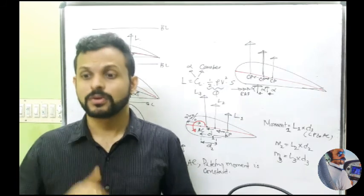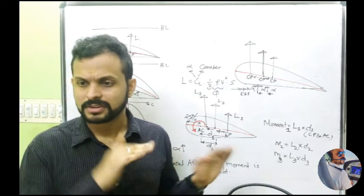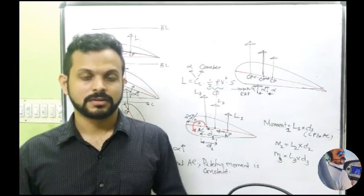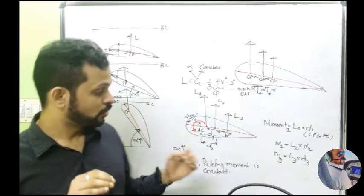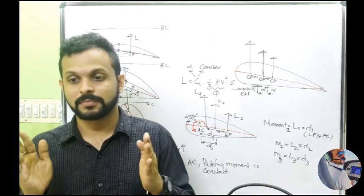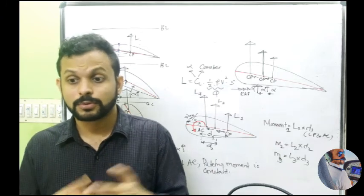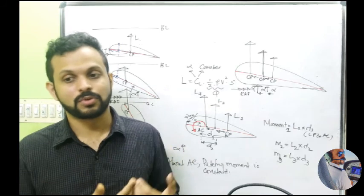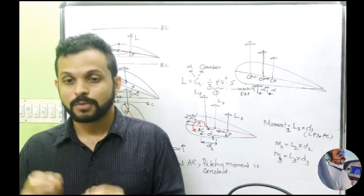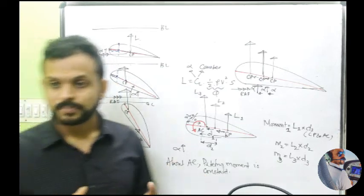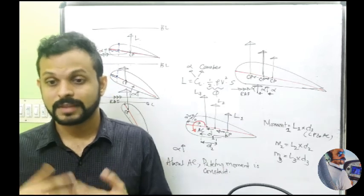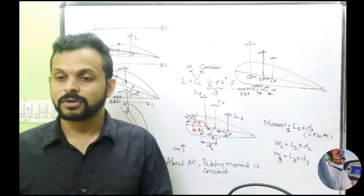Which of the following statements is correct? At normal angles of attack, the pitching moment is nose-up — the normal tendency of an aircraft is nose-down, so that statement is definitely wrong. Second: the pitching moment about the aerodynamic center is constant at normal angles of attack — think about it. All these explanations are within the limits of normal angle of attack up to stalling angle of attack. Beyond stalling, the entire aerodynamics of the wing is changing. So at normal ranges of angles of attack, the pitching moment about the aerodynamic center is constant.